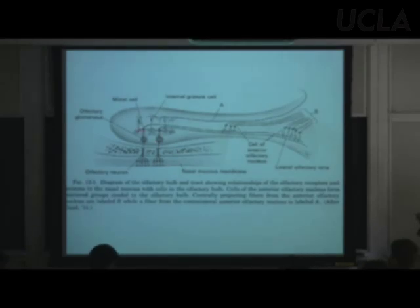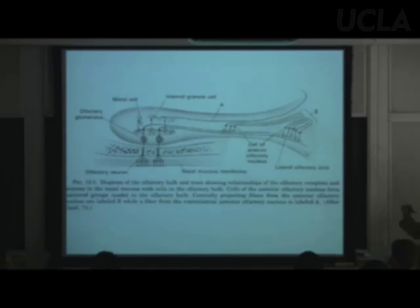The olfactory nerve is actually composed of individual cells — a whole series of them along the nasal mucosa. They jump across the skull through the spongy cribriform plate and synapse in the olfactory bulb. That's why we could see the olfactory bulb in lab but never the olfactory nerve itself.